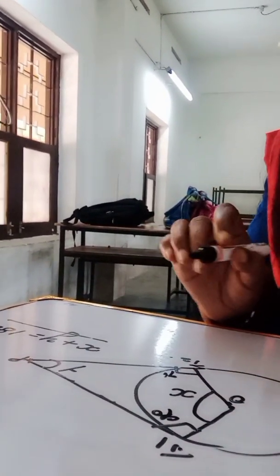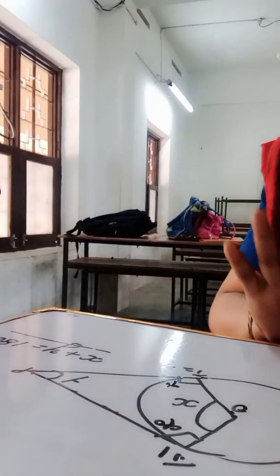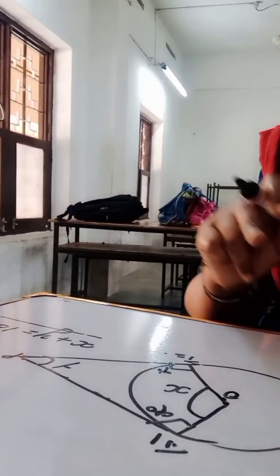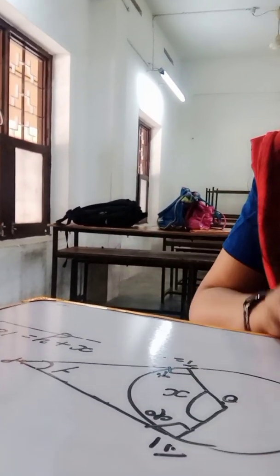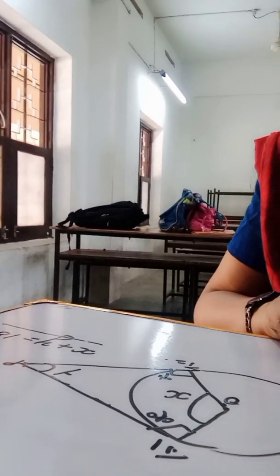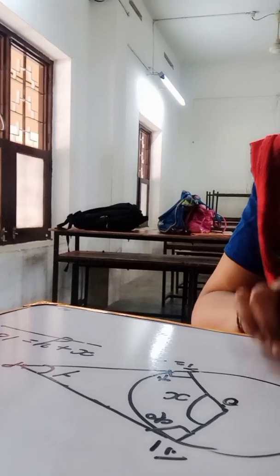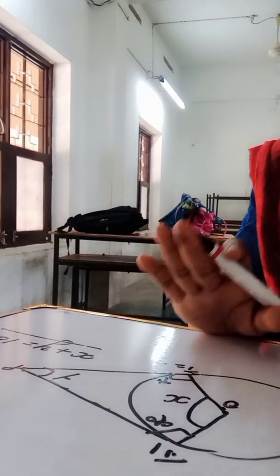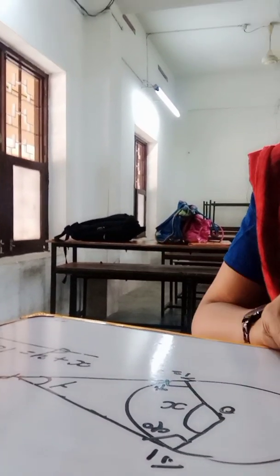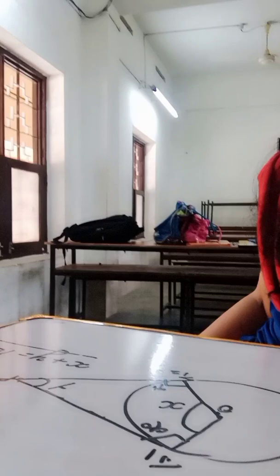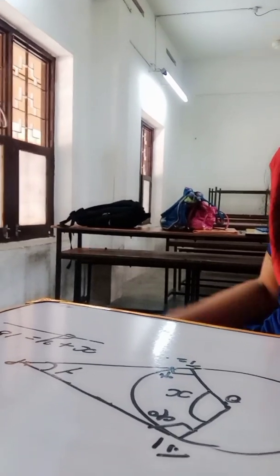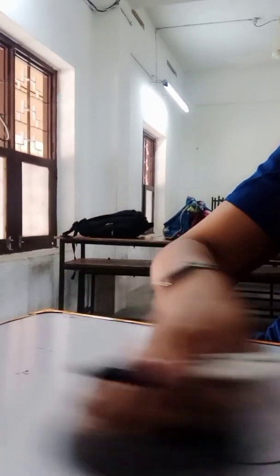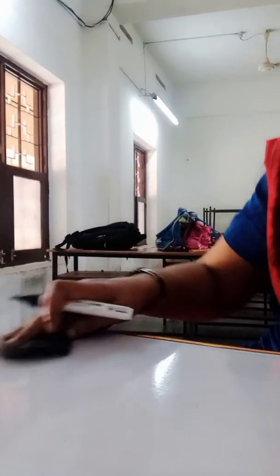What is the tangent-radius theorem? That is very important. The tangent to a circle is perpendicular to the radius at the point of contact. So this angle is 90 degrees.